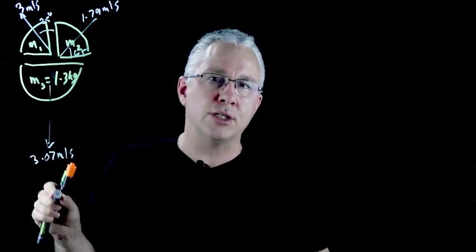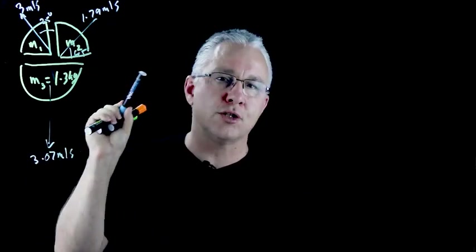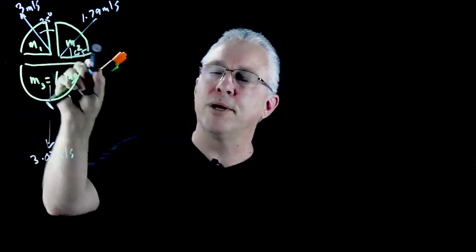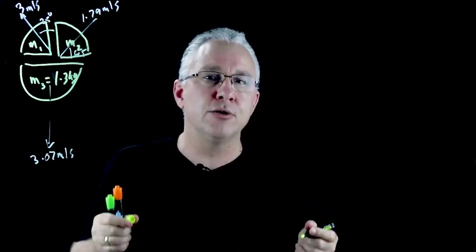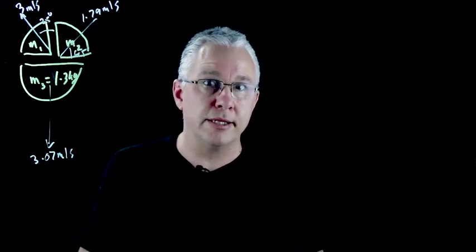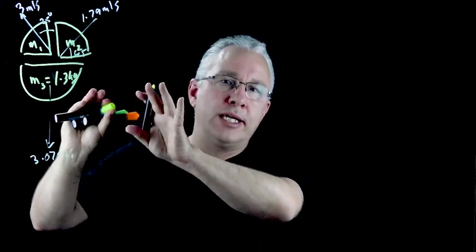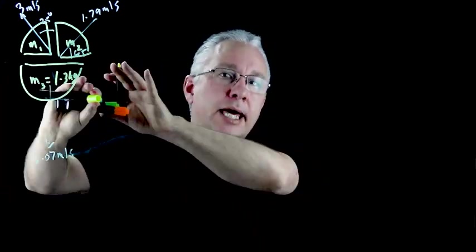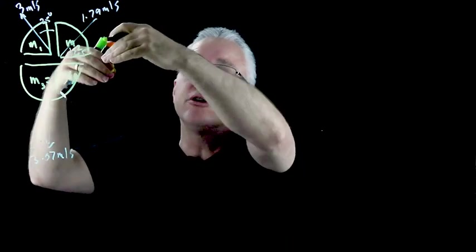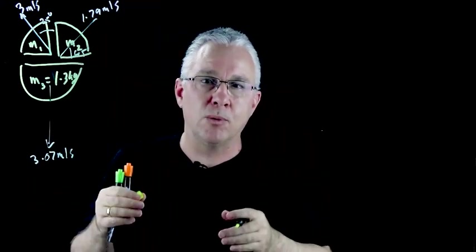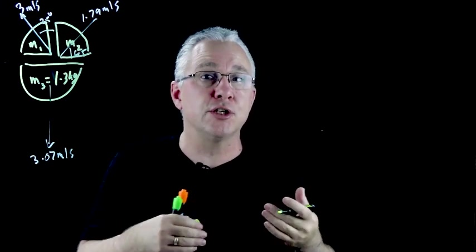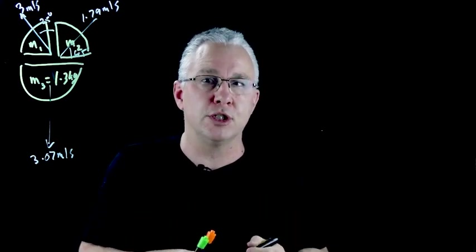So given all that information can we now solve what the total mass of the plate was by working out what the mass one and mass two is, and we do this by using the component method. In other words what we do is we treat this plane, the x plane, separately to the vertical plane and do them independently and so we basically apply the conservation of momentum to both of those situations.